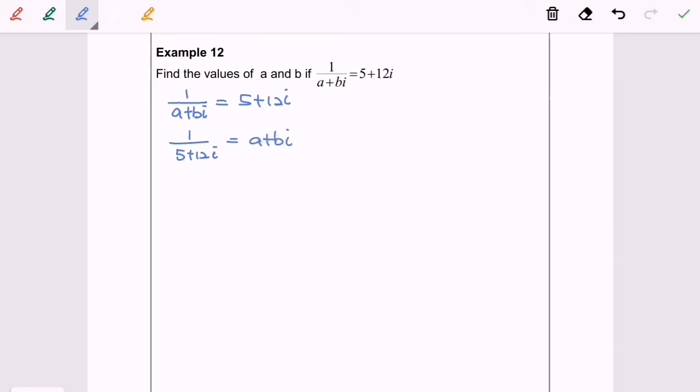Okay, so now after we rearrange the situation, I'm going to multiply with the conjugate. So a plus bi will be equals to 1 over 5 plus 12i multiply with the conjugate, we will have 5 minus 12i over 5 minus 12i.